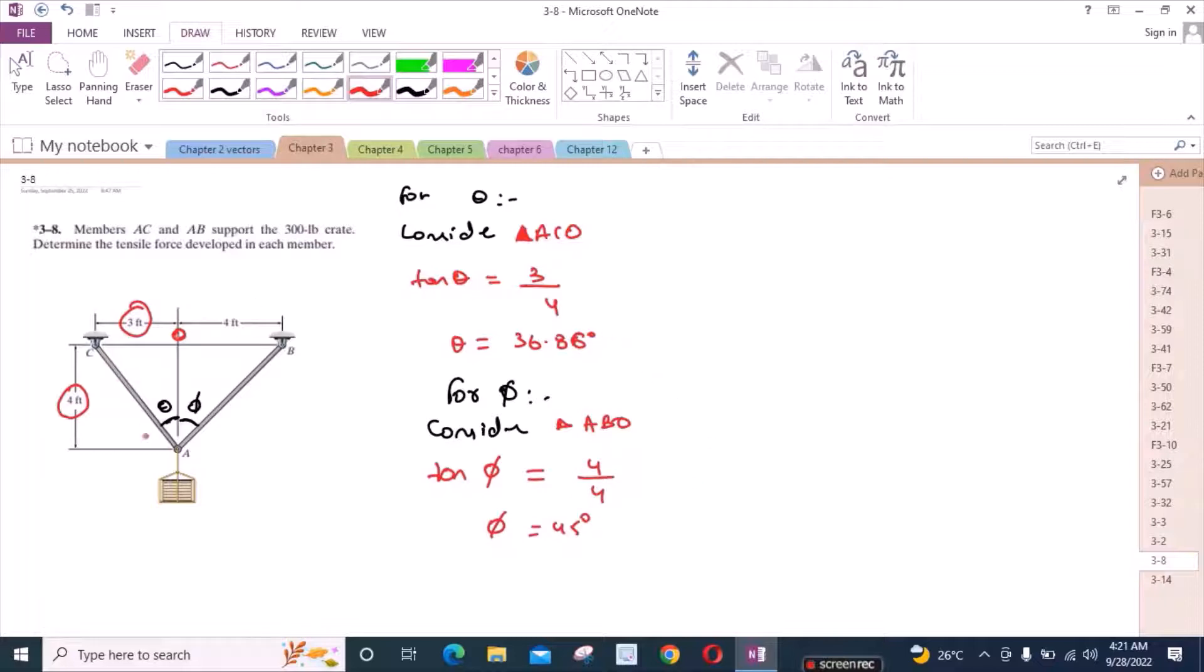Now let's draw a free body diagram of point A. We have one inclined force at an angle of 45 degrees with the vertical and another inclined force at an angle of 36.86 degrees from the horizontal, and I have one vertical force acting downwards of this weight.